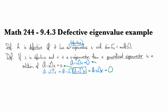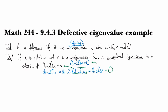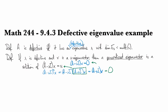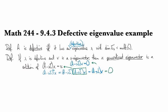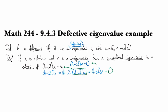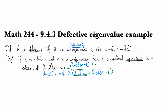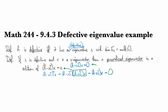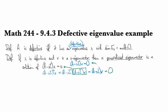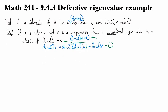So x is not a solution of (A − λI)x = 0, but it is a solution of (A − λI)²x = 0. That's what makes it a generalized eigenvector.